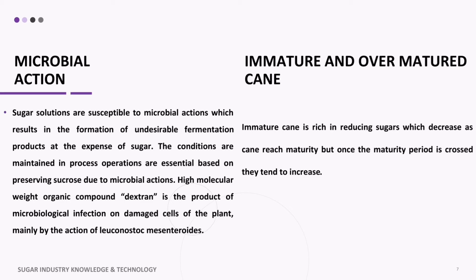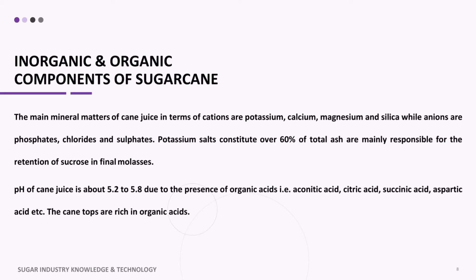The main mineral matters of cane juice in terms of cations are potassium, calcium, magnesium, and silica, while anions are phosphates, chlorides, and sulfates. Potassium salts constitute over 60 percent of total ash and are mainly responsible for the retention of sucrose in final molasses. The pH of cane juice is about 5.2 to 5.8 due to the presence of organic acids.